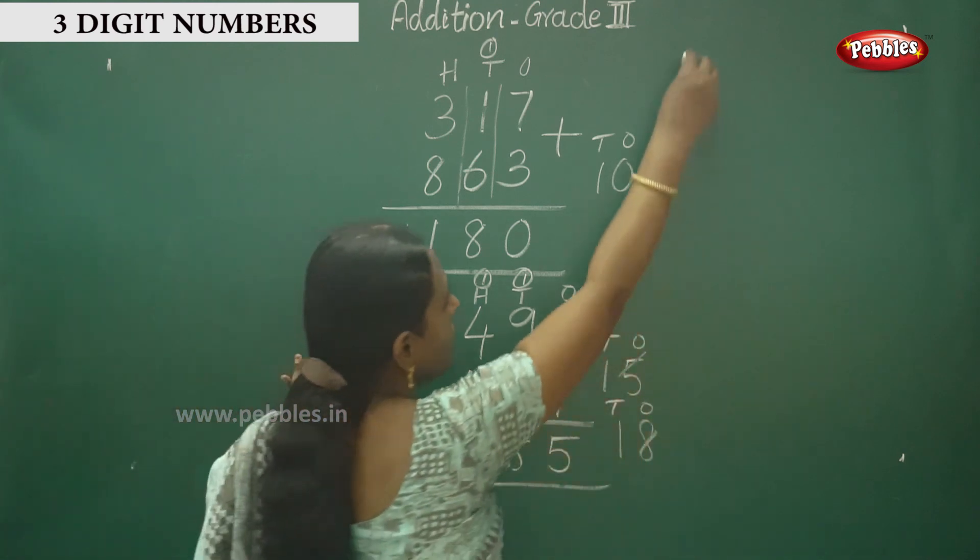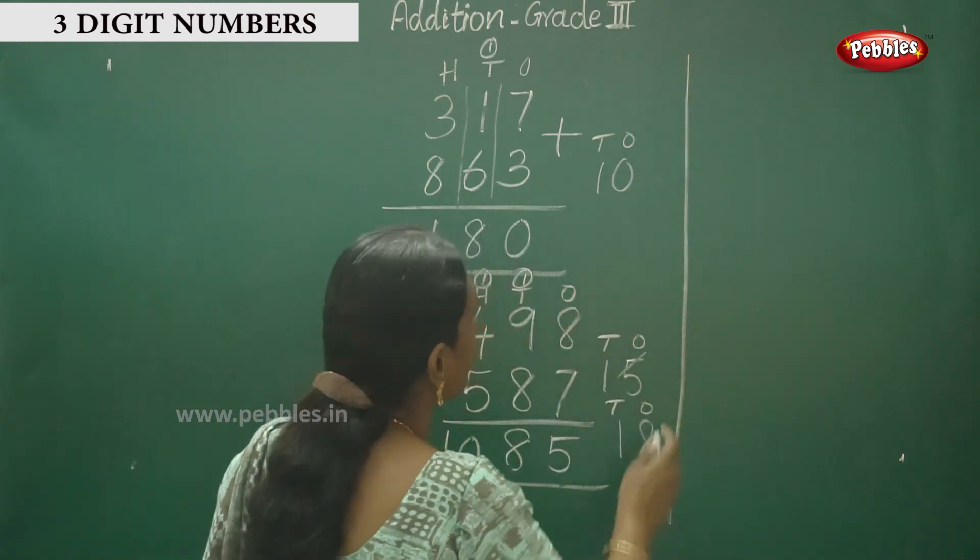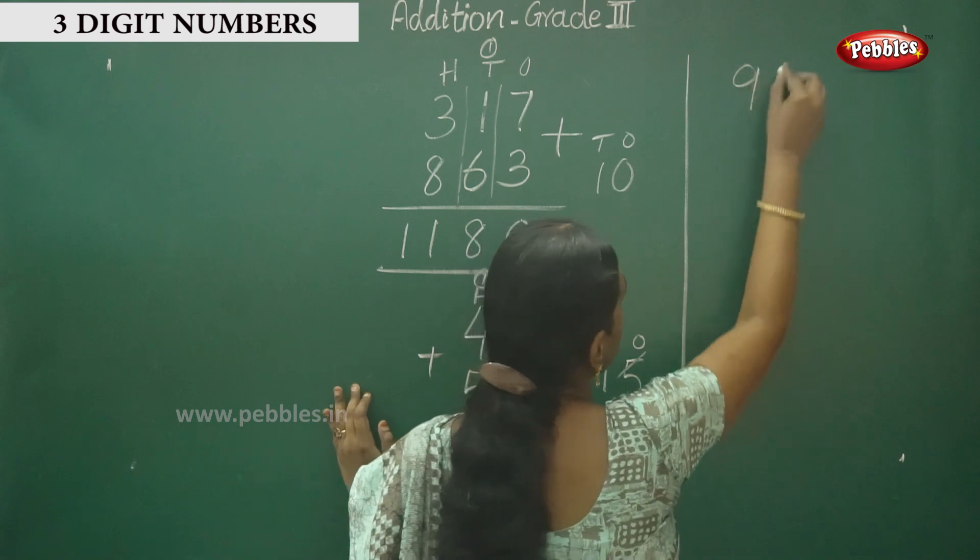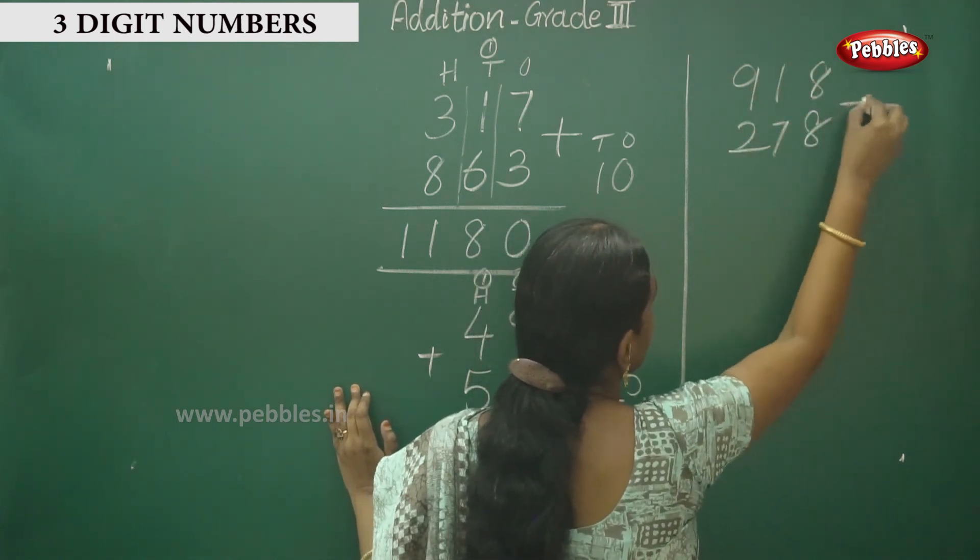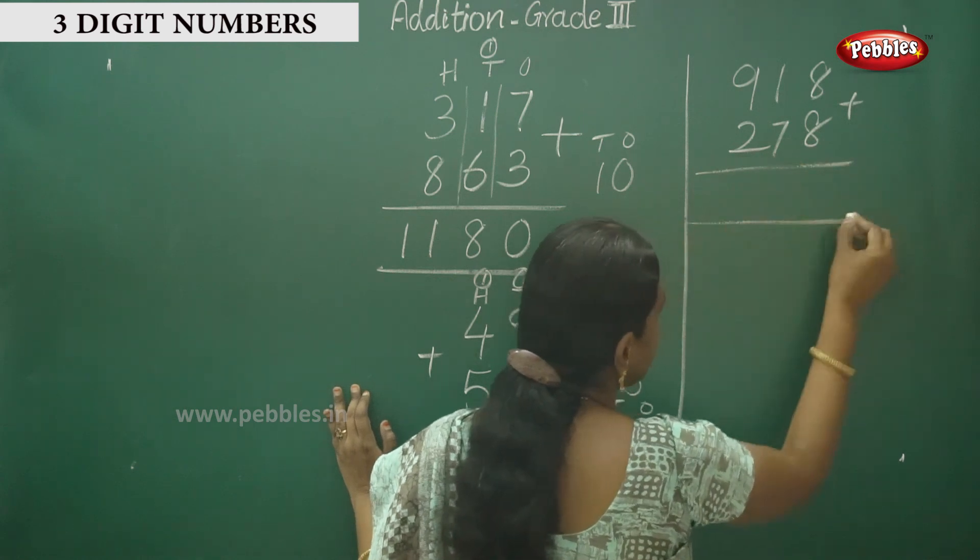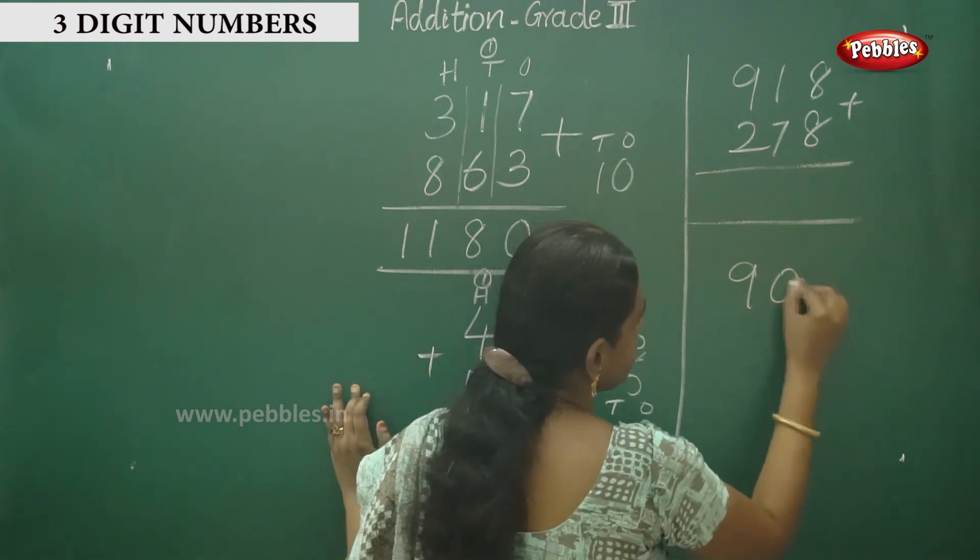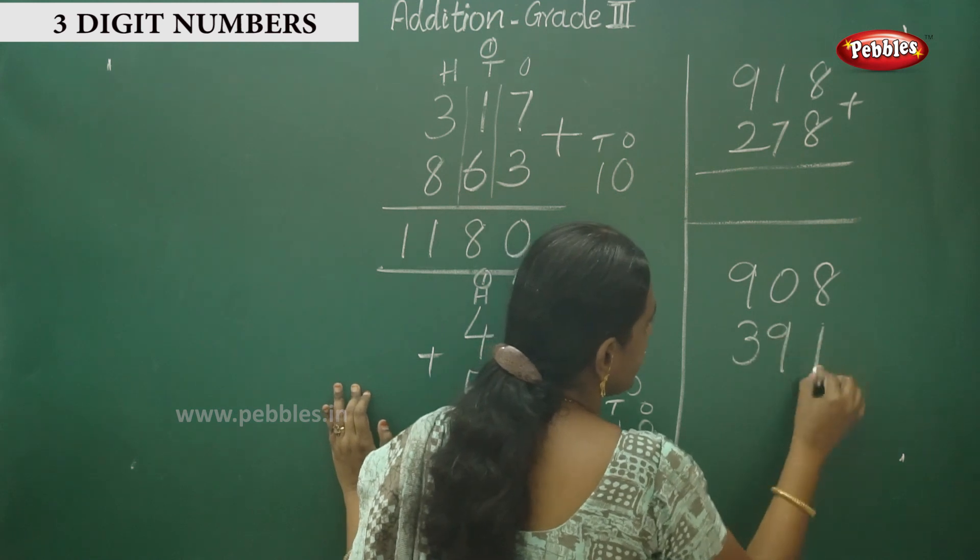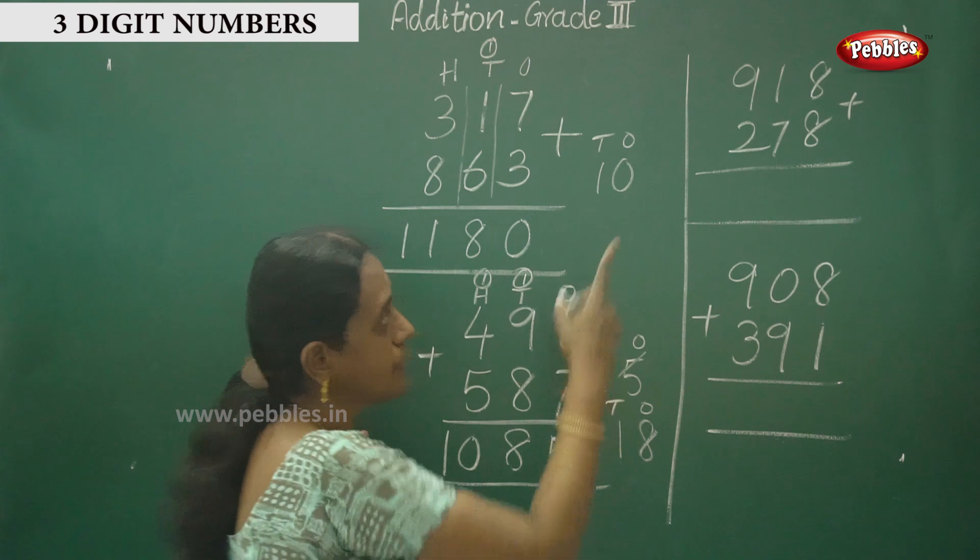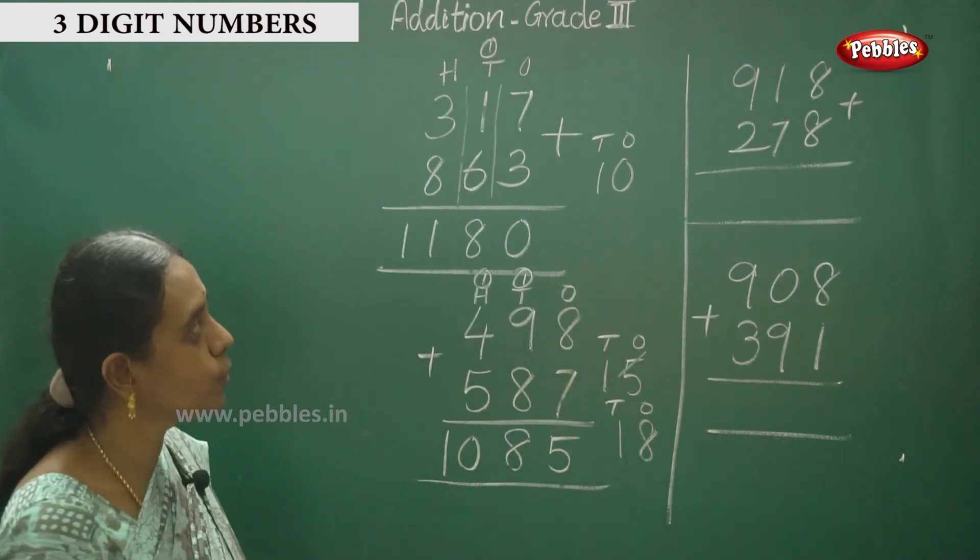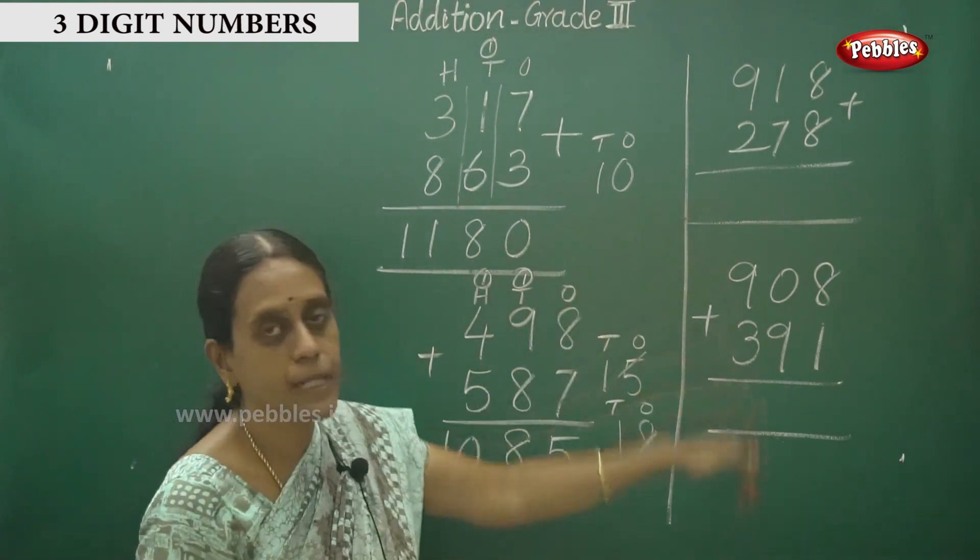Practice some more sums. Three-digit numbers, carry over and without carry over. This is the method of practice.